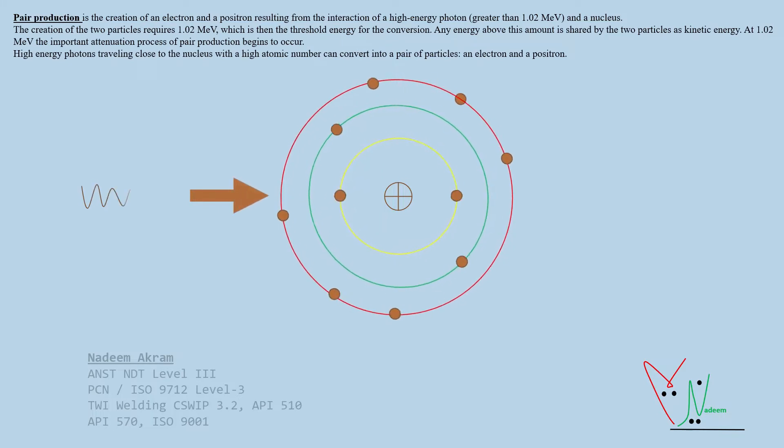The creation of the two particles requires 1.02 mega electron volts, which is the threshold energy for the conversion. Any energy above this amount is shared by the two particles as kinetic energy.